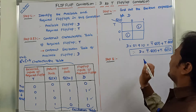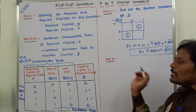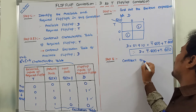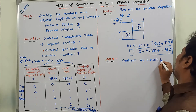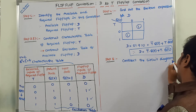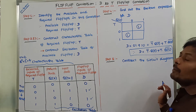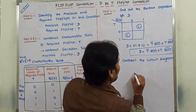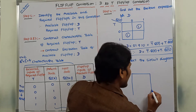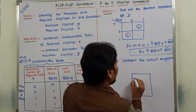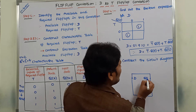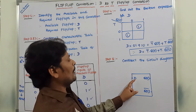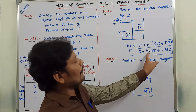So the Boolean expression obtained from step 4 is D = T̄·Q(t) + T·Q̄(t). Now the last step, step 5, is to construct the circuit diagram for converting D flip-flop to T flip-flop. To construct the circuit diagram, first we have to consider the available flip-flop — here that is D flip-flop — and draw its block diagram with input D and outputs Q(t) and Q̄(t).